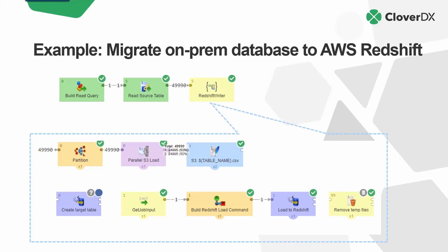The process for Snowflake is nearly identical — we're going to push the data to S3 files and then from S3 files into Snowflake. In fact, the design of the pipeline doesn't change at all. It's just which component we use at the end.